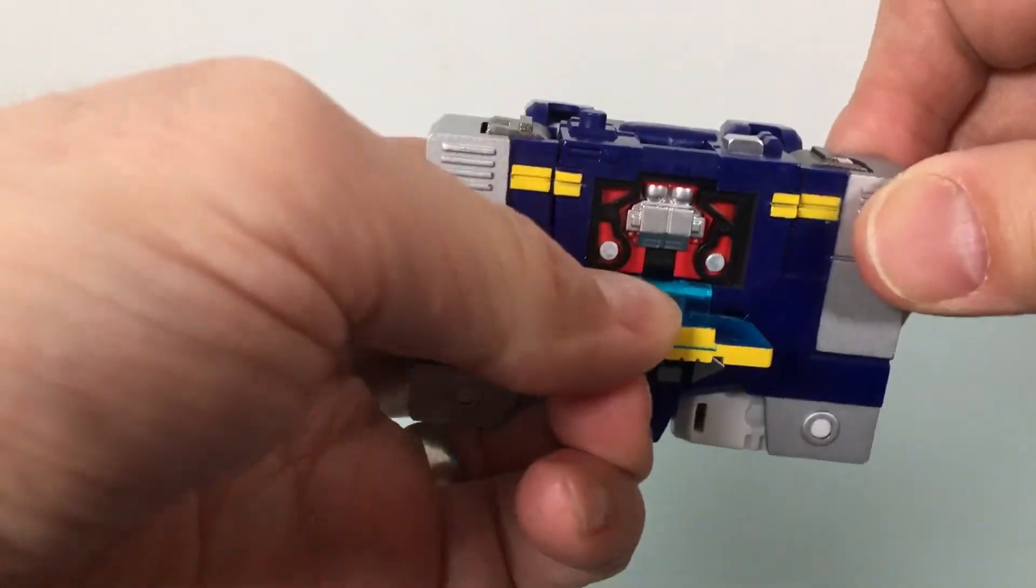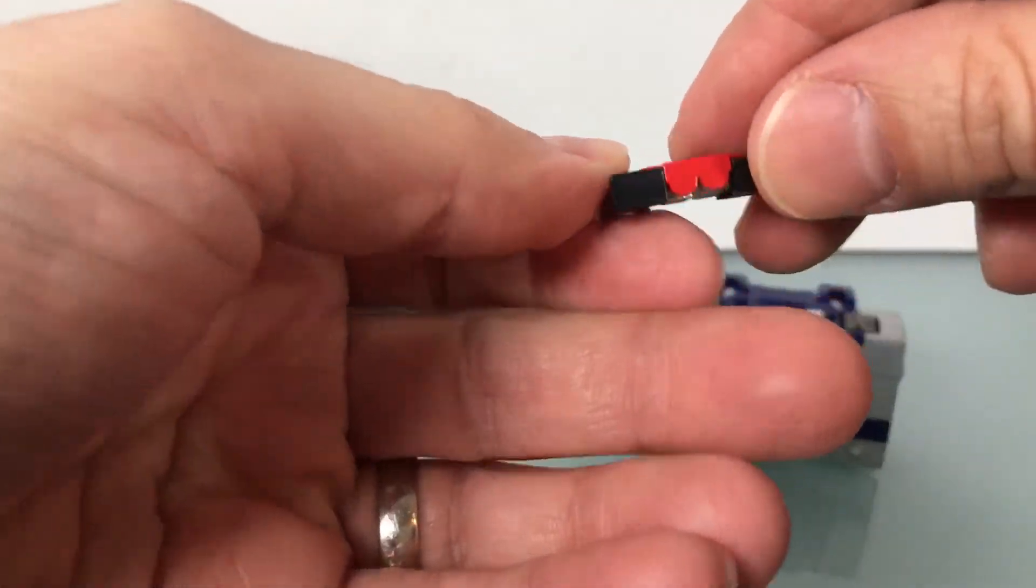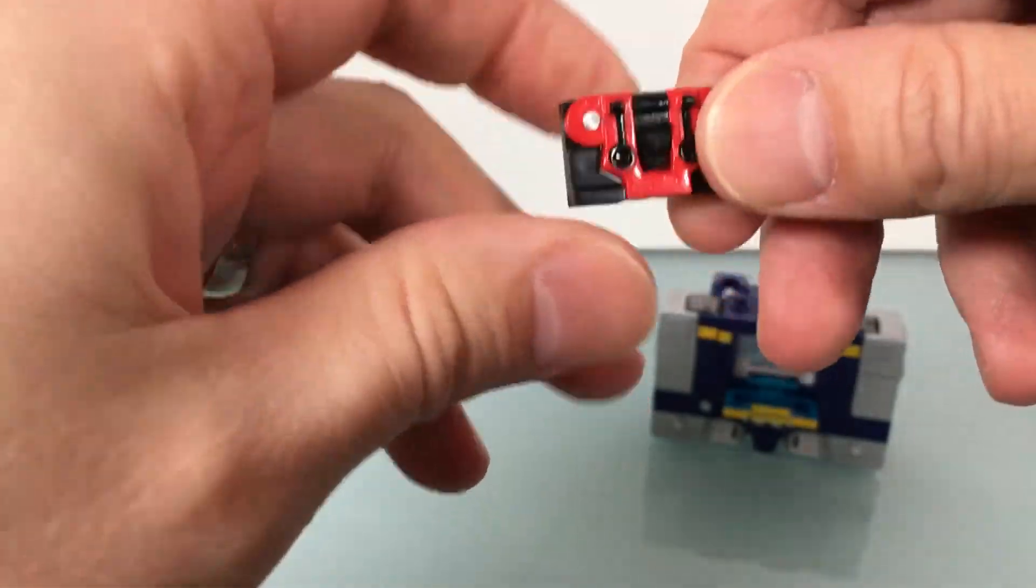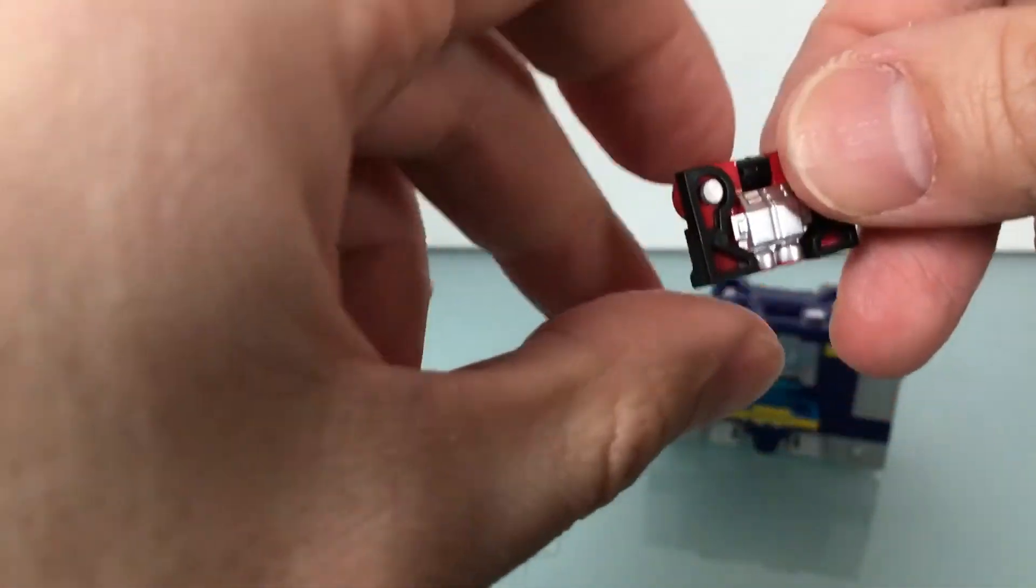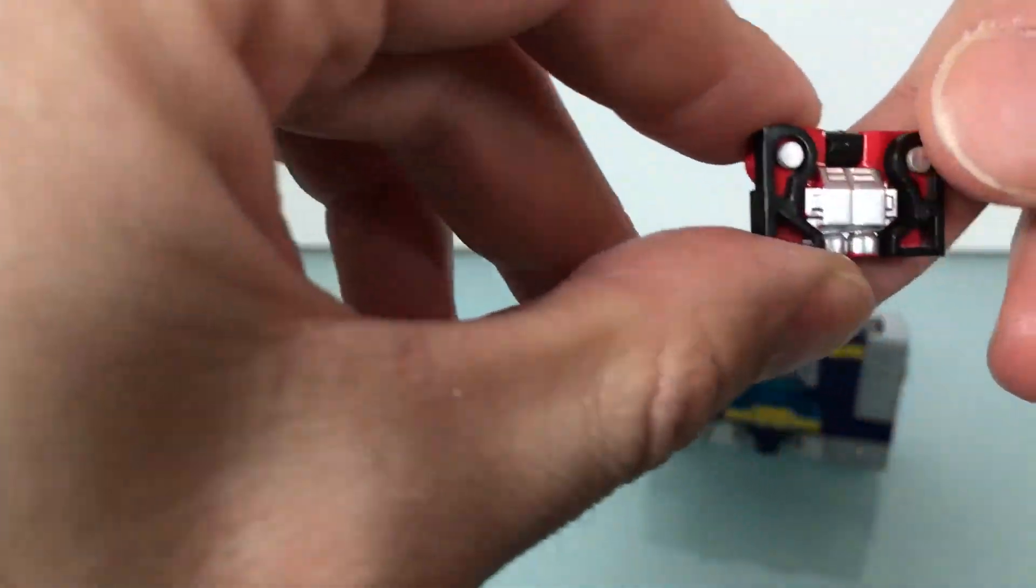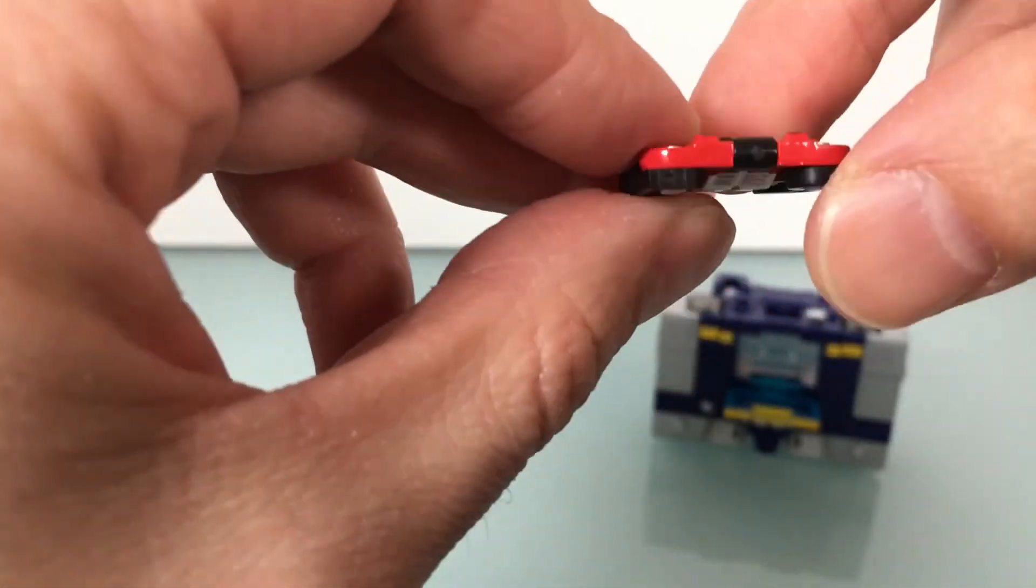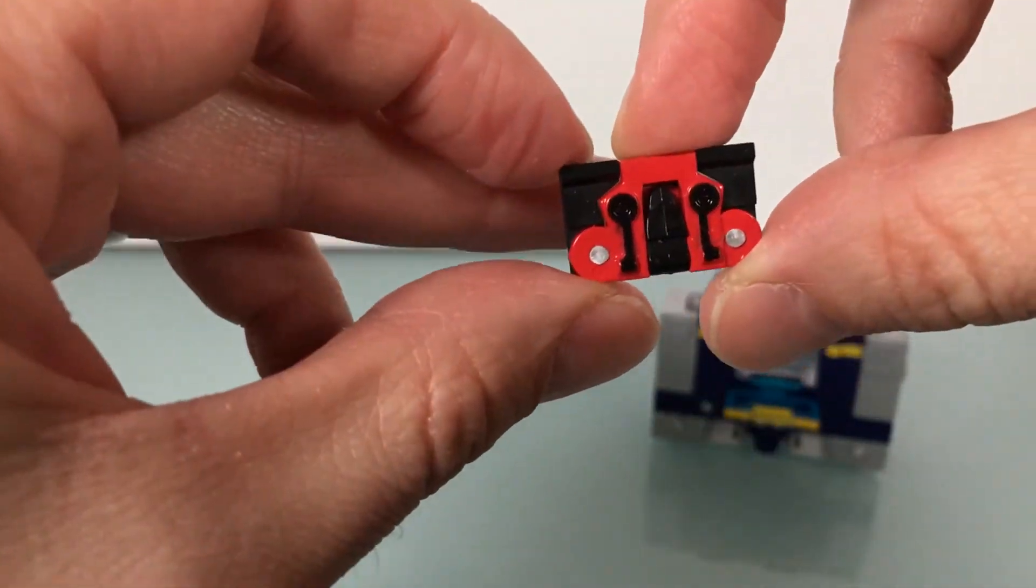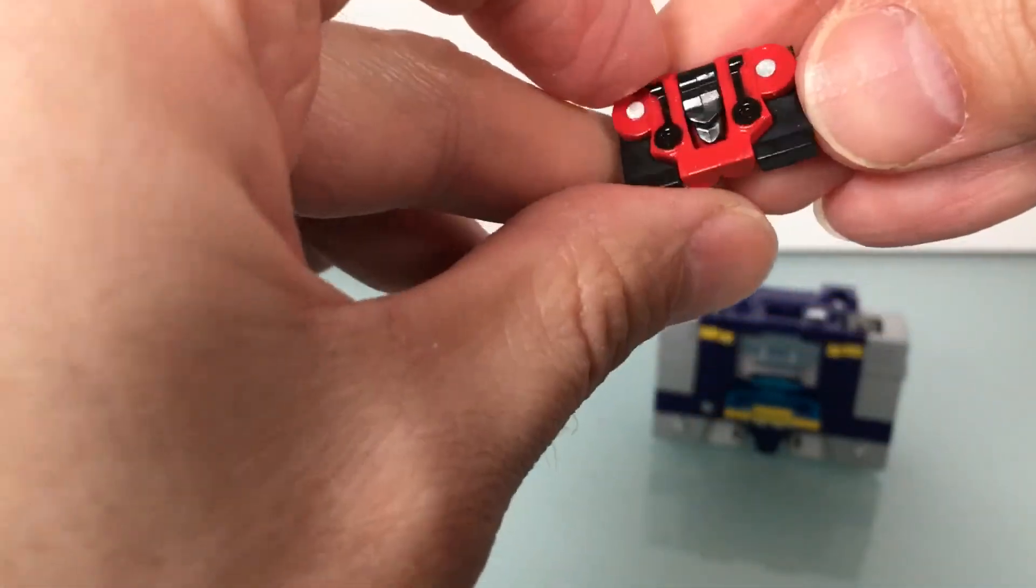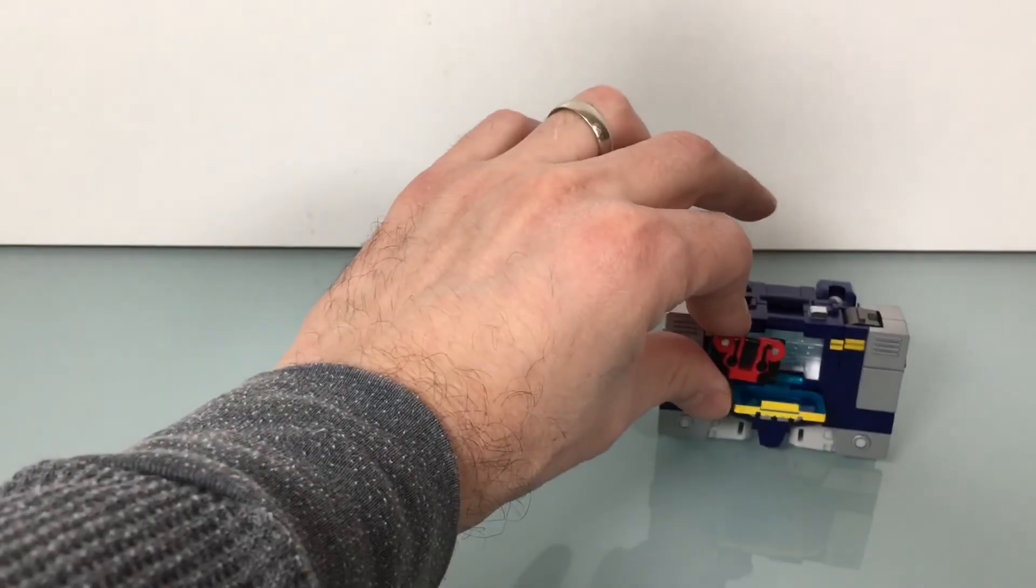But if you open it up like that, you reveal the little laser bird, Laserbeak. A little cassette tape there. That's what it looks like there. And the paint's actually probably better here. That silver looks really good, and the black's fine if it's painted. Yeah, on the back, it's definitely painted. So, there you go.